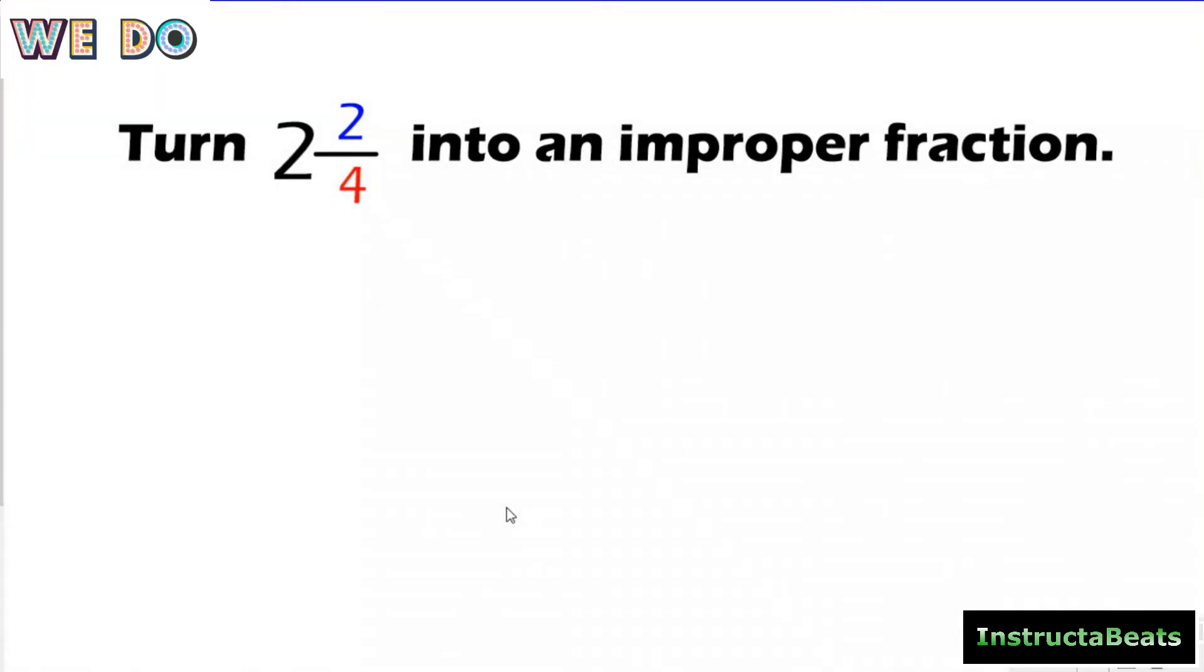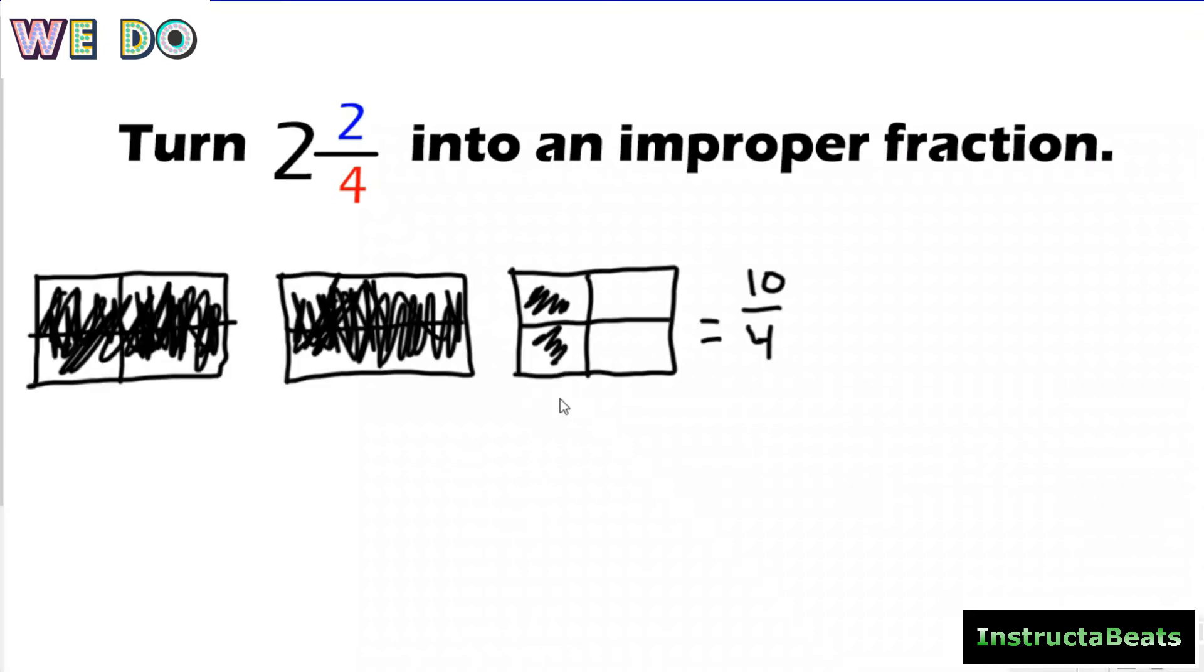Here we have a we-do problem, okay? So we want to turn 2 and 2/4 into an improper fraction using the shuffle, right? Our super secret shortcut. So first, let me put up our area model. So if we did it the long way, this is what it would look like. We'd have to draw out three wholes. We'd shade in two complete ones, and then 2/4 in my other one, and then we'd add up all those pieces, and we would get 10/4. Again, I just wanted to—you don't have to do that part because we're working on the shortcut today, but I want to show you why the shortcut works.